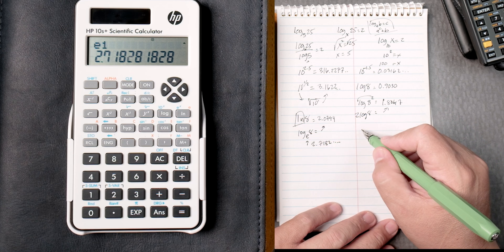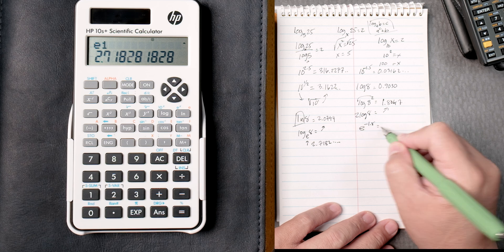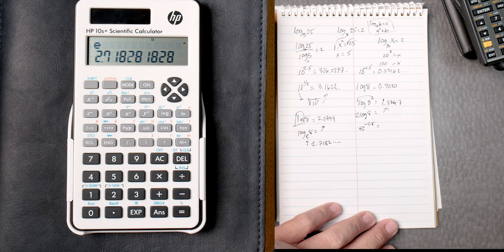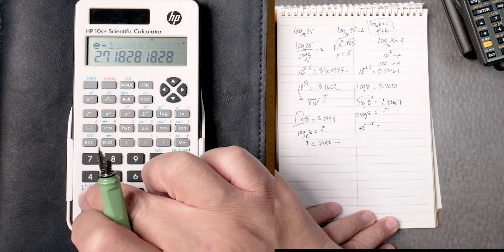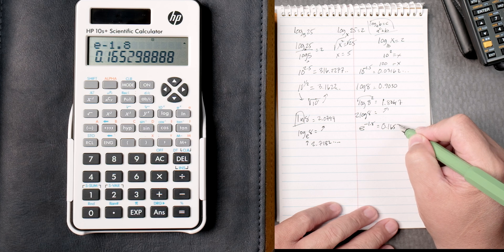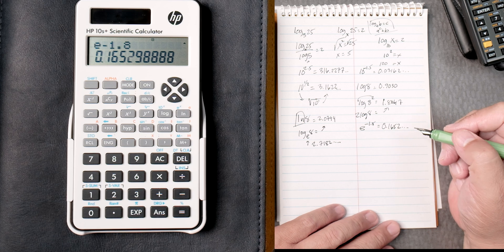So natural log of E minus 1.8. Shift E to the X. Negative 1.8 equals 0.1652 and it keeps on going, which is right.